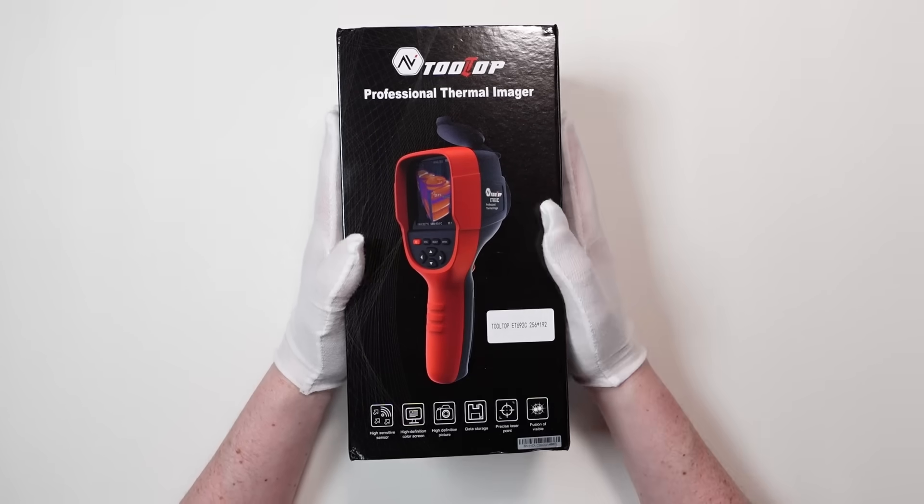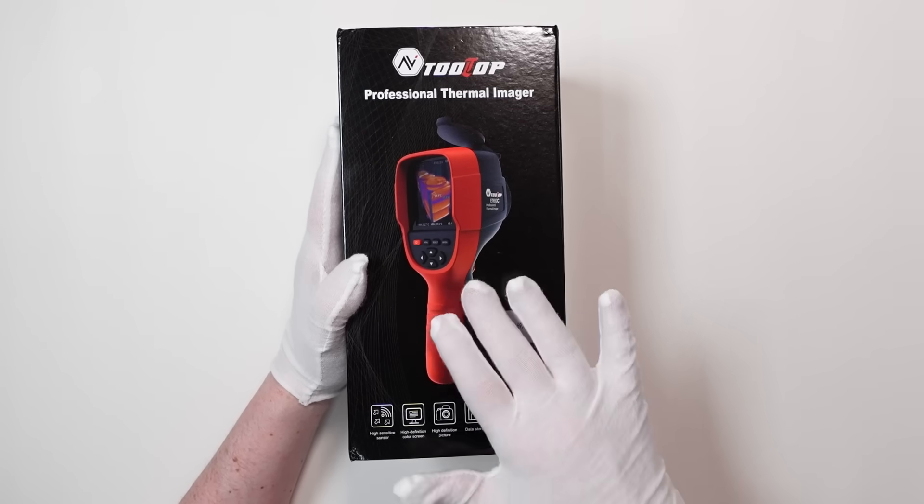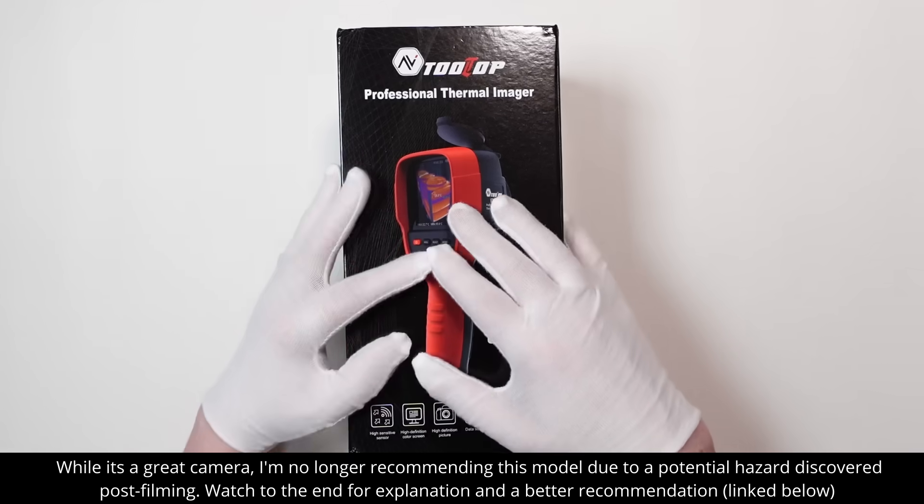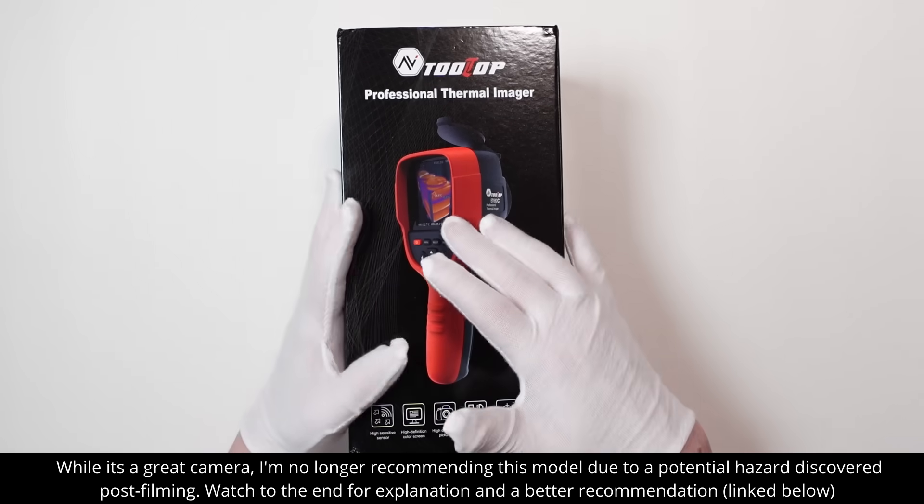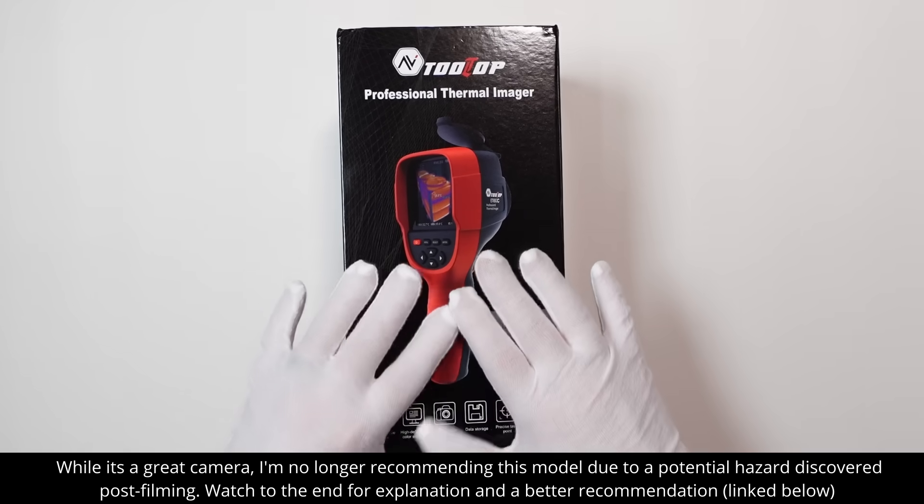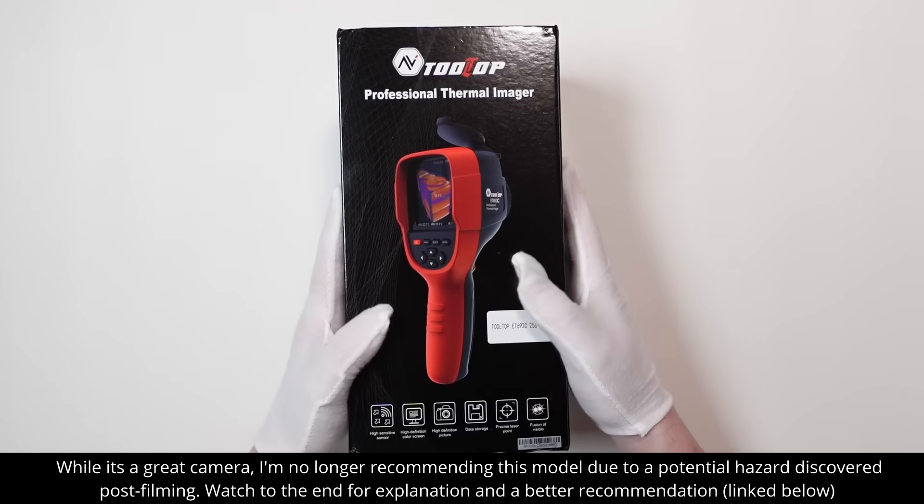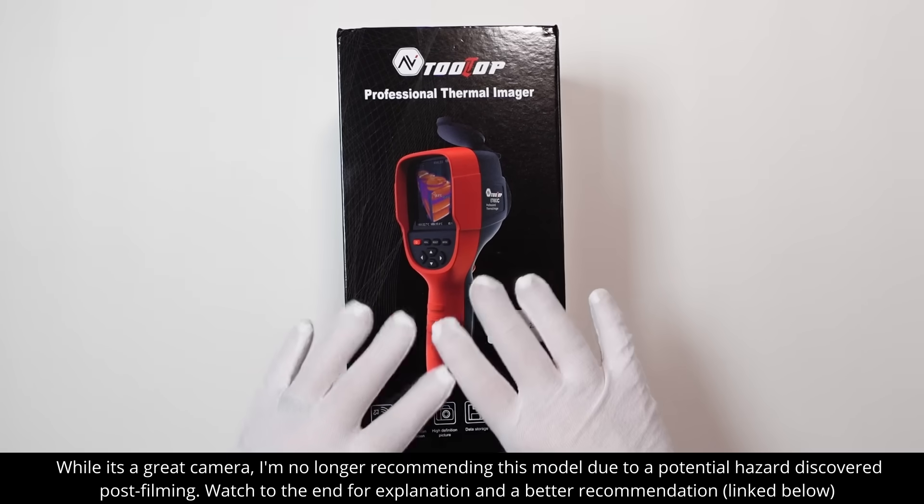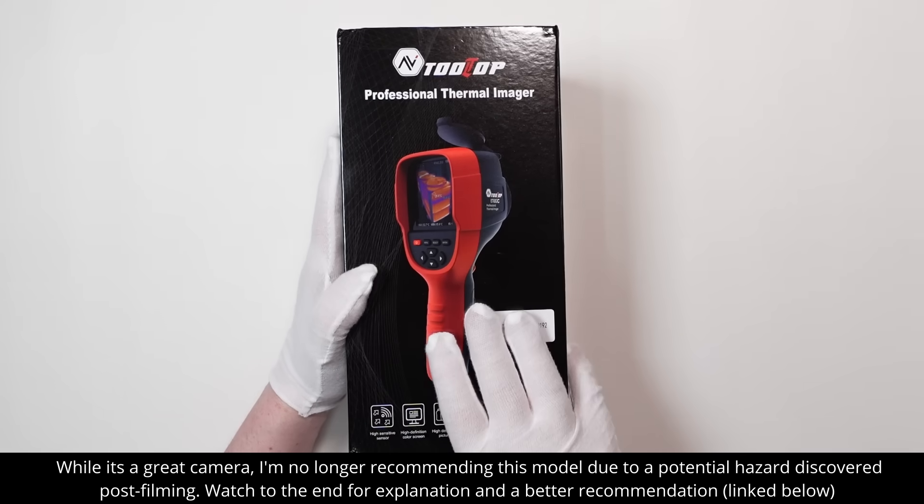Okay, so finally, the unit that I purchased, the Tooltop ET-692C. At $192 before coupons delivered, you get that improved 256x192 thermal pixels, a bigger screen, visible light camera, and onboard storage so you can take photos and videos and save them on your computer. In my opinion, it's the best value high spec unit in this price range, and we'll take a closer look at it now.